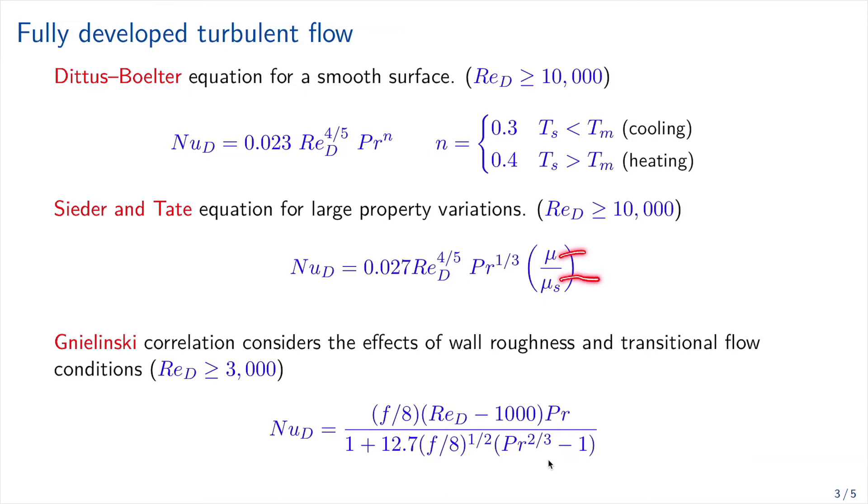So how do we select those for our pipe? So μ is going to be computed from tables at the average of the mean temperature on the pipe. μs is going to be computed at the temperature of the surface. And so this is good for large Prandtls like oils.